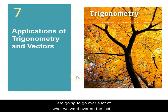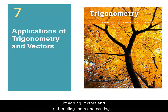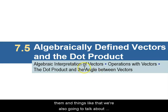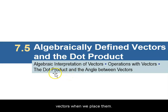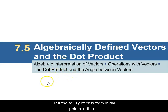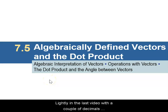Today we're going to go over a lot of what we covered in the last video. We're going to look at the algebra of adding vectors, subtracting them, and scaling them. We're also going to talk about a very important operation called the Dot Product and how we can find the angle that lies between two vectors when we place them tail to tail, or from initial point to initial point.